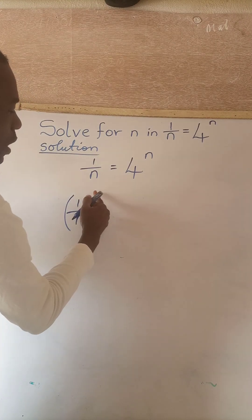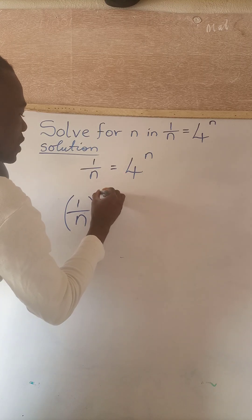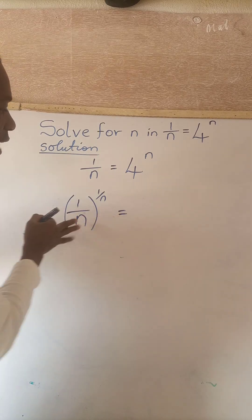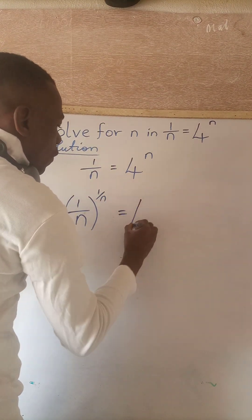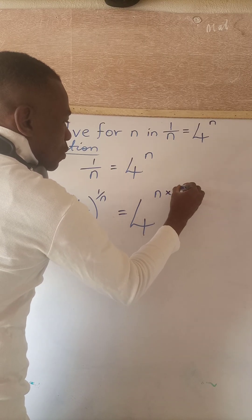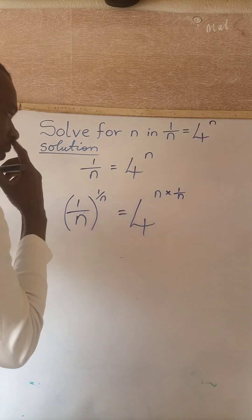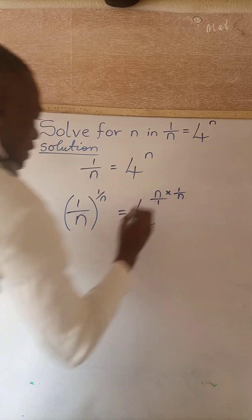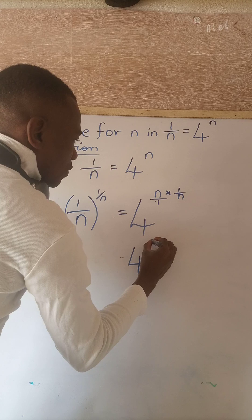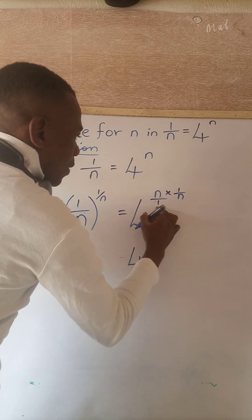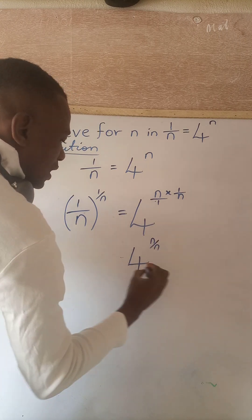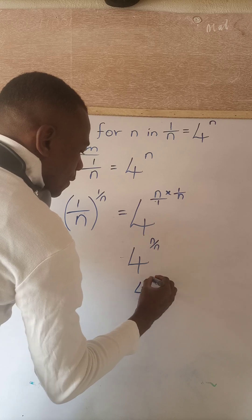Its index is 1. So I will multiply it by 1 over n and it will give me 1 over n, which is equal to... now what I did this side, I will do the same thing on the other side. We have 4 power the index is n times 1 over n as well. So by so doing, this side now will become 4 power n times n gives us n, all over 1 times n gives us n. So n divide n, we will now have 4 power 1.